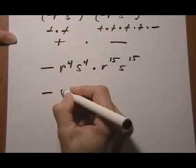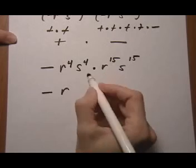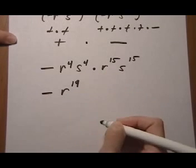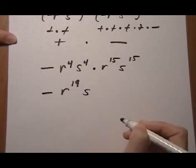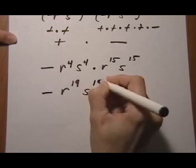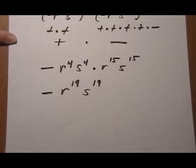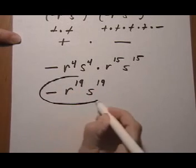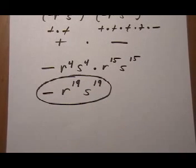So the minus sign just tags along. And then we do r, keep the base, add the exponents, 4 plus 15. Then s, keep the base, add the exponents, 4 plus 15 again. So our final answer is minus r to the 19, s to the 19.